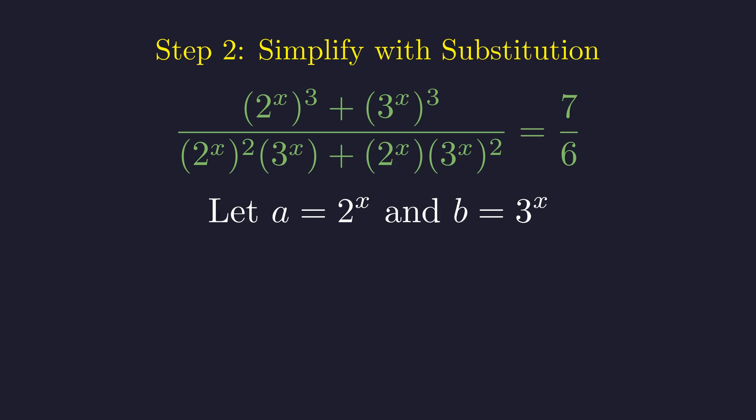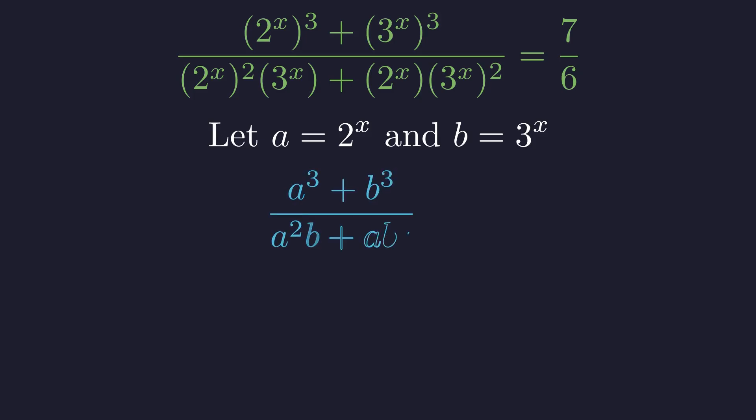a = 2^x is always greater than 0, and b = 3^x is always greater than 0. And just like that, our intimidating exponential equation transforms into a clean algebraic fraction in terms of a and b.